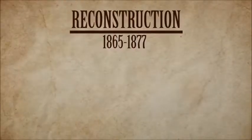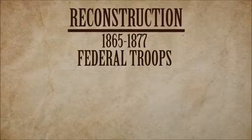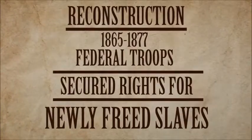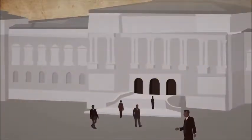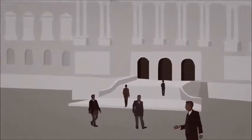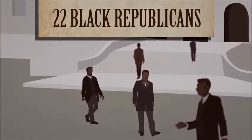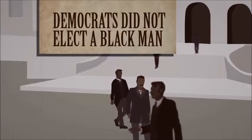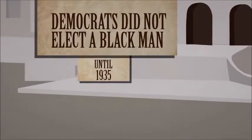During the era of Reconstruction, federal troops stationed in the South helped secure rights for the newly freed slaves. Hundreds of black men were elected to southern state legislatures as Republicans, and 22 black Republicans served in the U.S. Congress by 1900. The Democrats did not elect a black man to Congress until 1935.